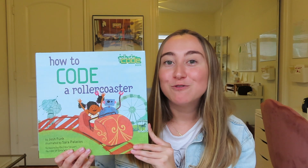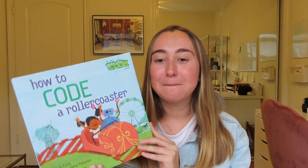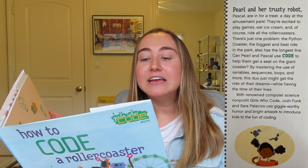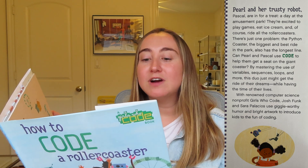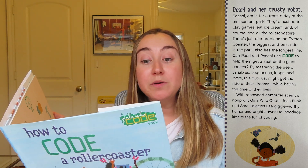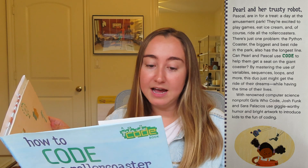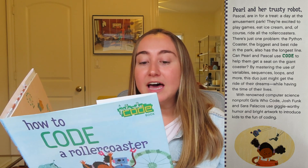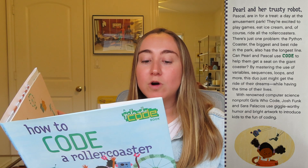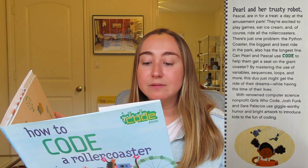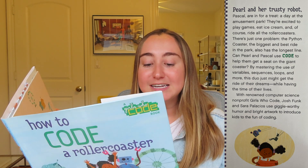The next book is 'How to Code a Roller Coaster,' a sequel to 'How to Code a Sandcastle.' Pearl and her trusty robot Pascal are in for a treat — a day at the amusement park. They're excited to play games, eat ice cream, and ride all the roller coasters. There's just one problem: the Python Coaster, the biggest and best ride in the park, also has the longest line. Can Pearl and Pascal use code to get a seat? By mastering variables, sequences, loops, and more, this duo just might get the ride of their dreams.